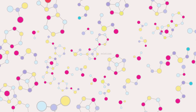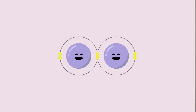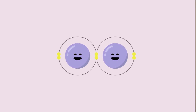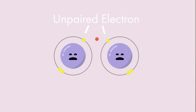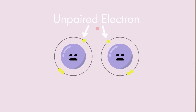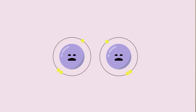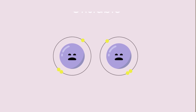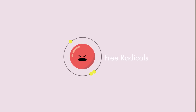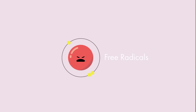Our body actually has billions of molecules, and sometimes molecules in our bodies split up. As a result, they have an unpaired electron. When a molecule has an unpaired electron, it actually causes it to be very unstable. They have a name for those unstable creatures — they're called free radicals, and they can do a lot of damage to your body.